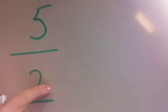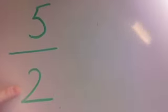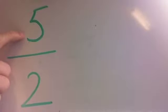The first thing we do is we have a look at our bottom number, the denominator. We ask ourselves, how many times will the denominator go into the numerator? That's the top number.